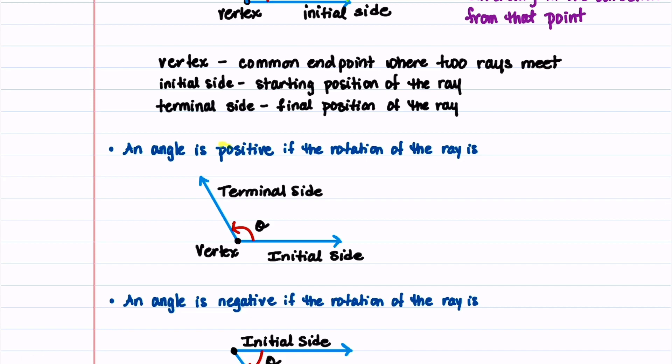An angle is positive if the rotation of the ray is counter-clockwise. This picture shows a positive angle because the rotation, which you can see right here, is counter-clockwise. So let's label this picture. This is a positive angle, so we can say that theta is greater than zero, and it has a counter-clockwise rotation.